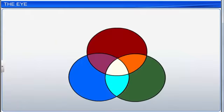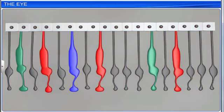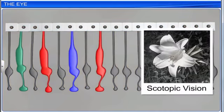Equal stimulation of all the three cones produces a sensation of white light. The cones are insensitive to dim light. So a person cannot see colors at night.